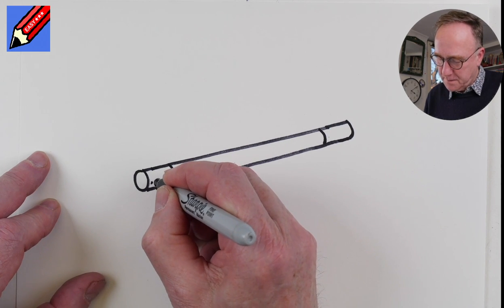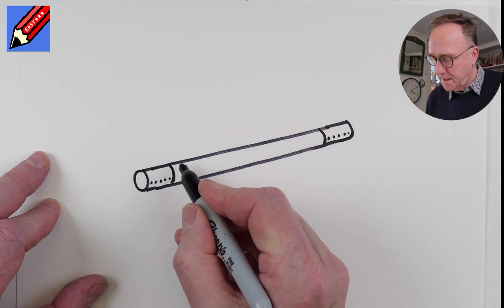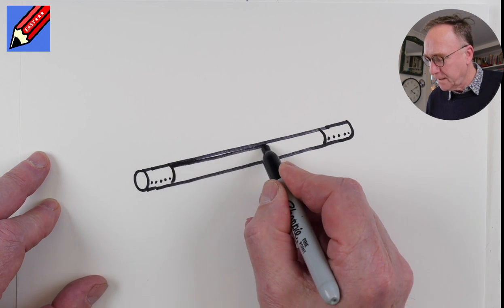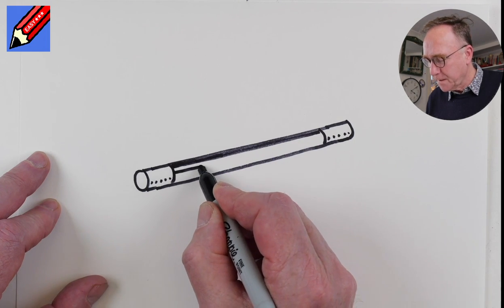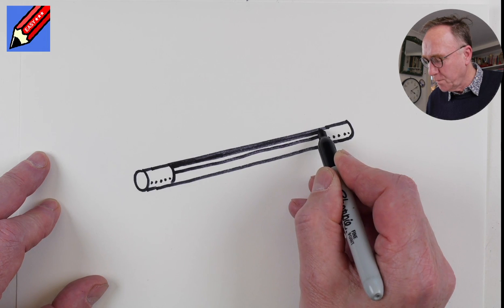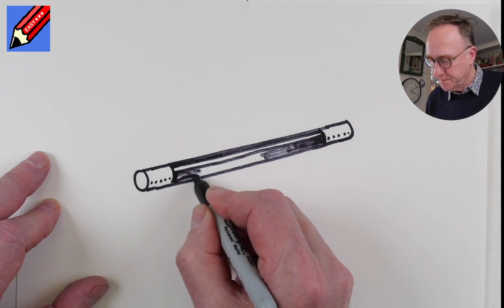And then here I'm just going to put these little dots for a bit of shade and then I'm going to make that line a little bit thicker along there. And then we're going to leave a little bit of white across there and then shade in the rest of it.